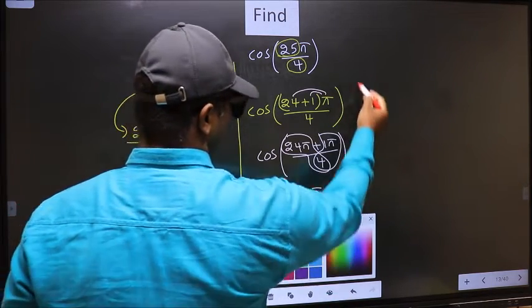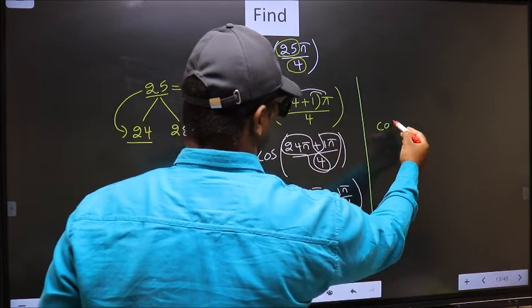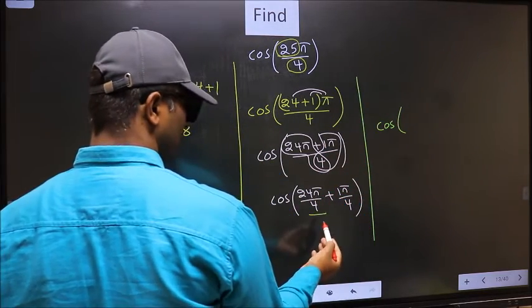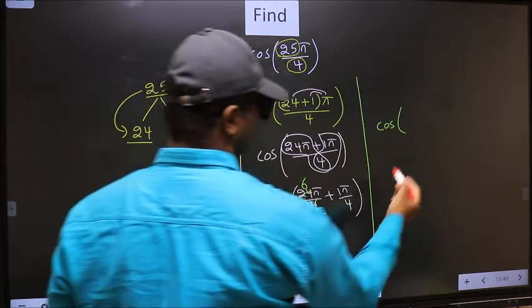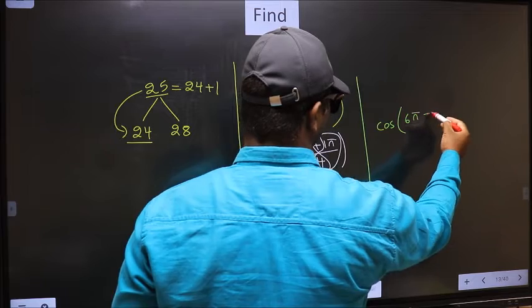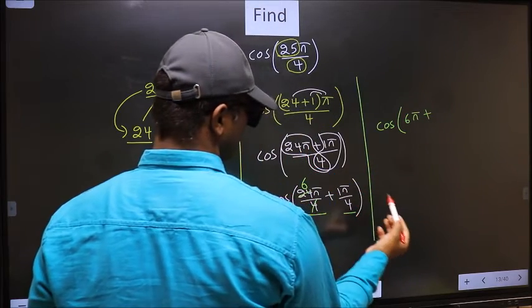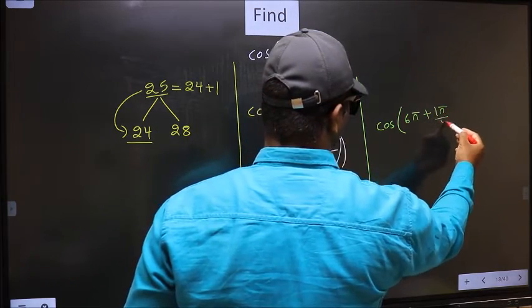Next. Cos. Now here you should cancel. 4 ones, 4 6. So we get 6 pi plus this no change. 1 pi by 4.